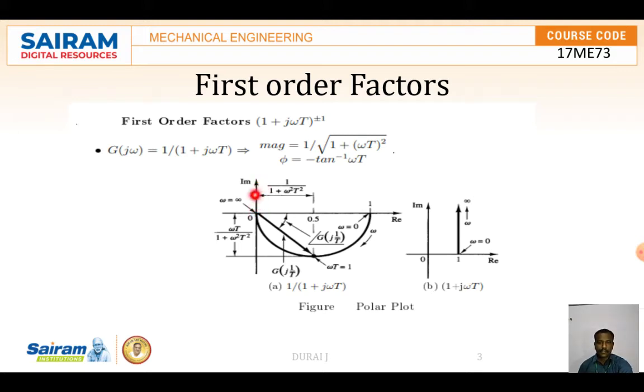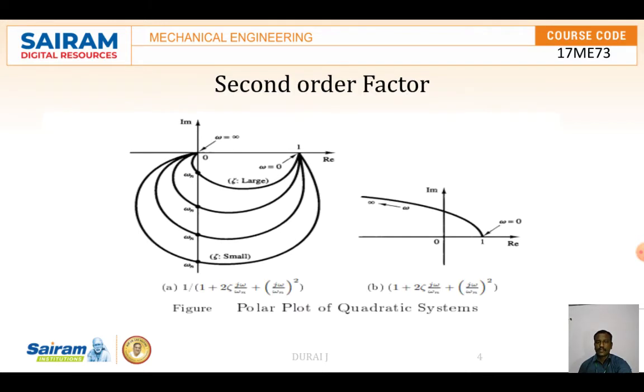Then comes to the drawing - imaginary and real. The curve will come over like this manner. The line, this is G(jω). The angle from here to here, that is ∠G(jω). This is for first order factor.